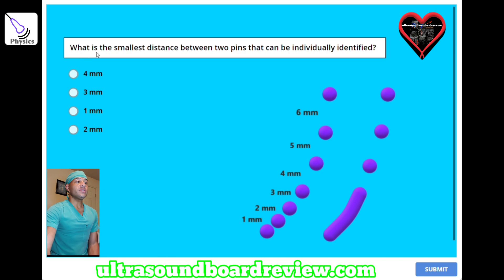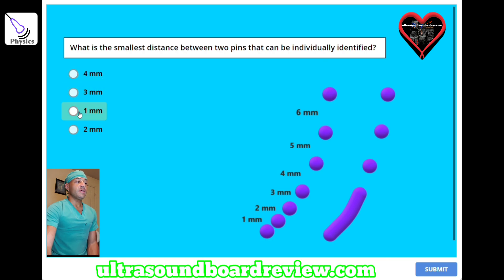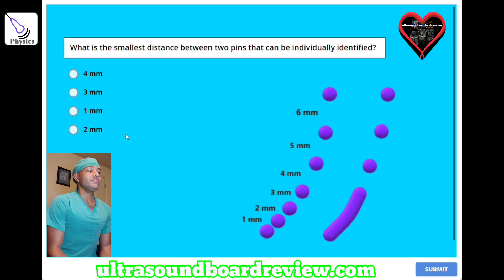What is the smallest distance between two pins that can be individually identified? A, 4 millimeters; B, 3 millimeters; C, 1 millimeter; or D, 2 millimeters. The answer is A, 4 millimeters.